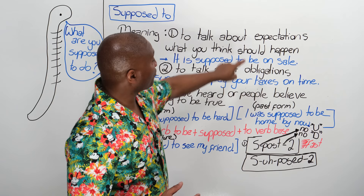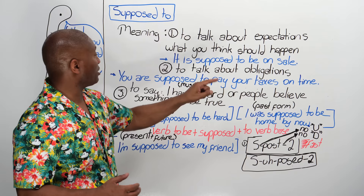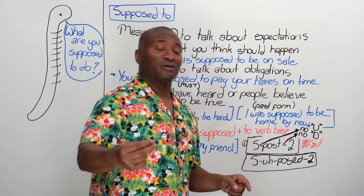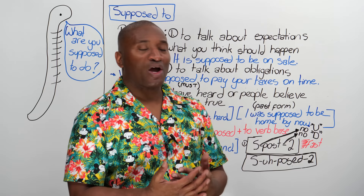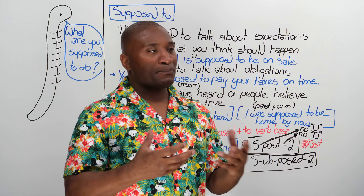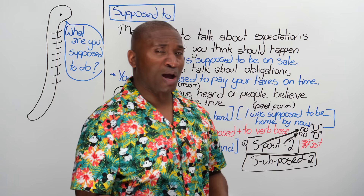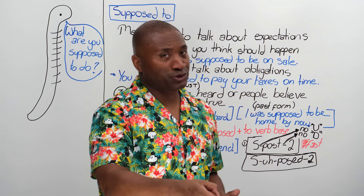You were supposed to pay your taxes on time. In this case, supposed to takes on the idea of must. You could say must, but remember this lesson is about teaching you how we more casually use our English. You're supposed to be on time, Johnson. You can say you must be on time, but clearly they weren't on time. So you say you're supposed to, because that's part of your obligation. We notice how expectation is morphing into an obligation — something stronger.